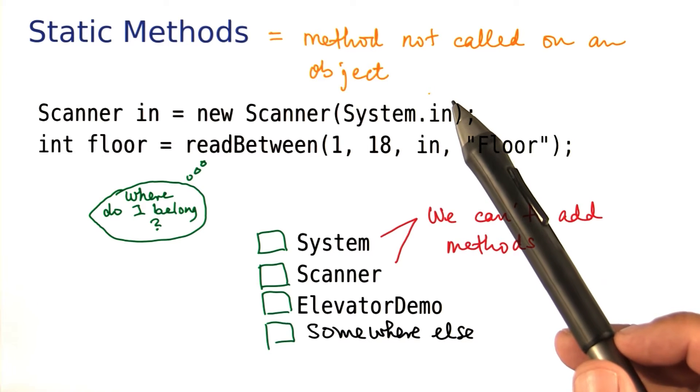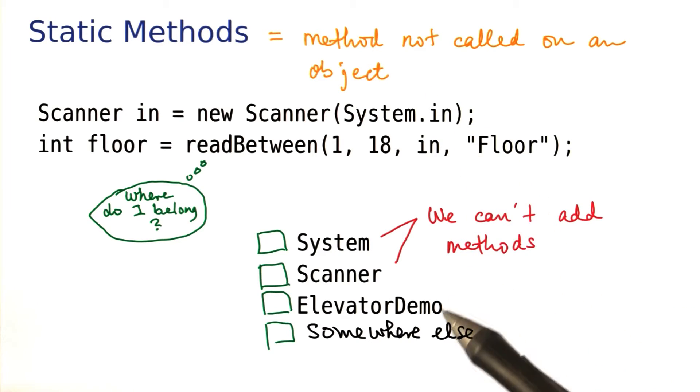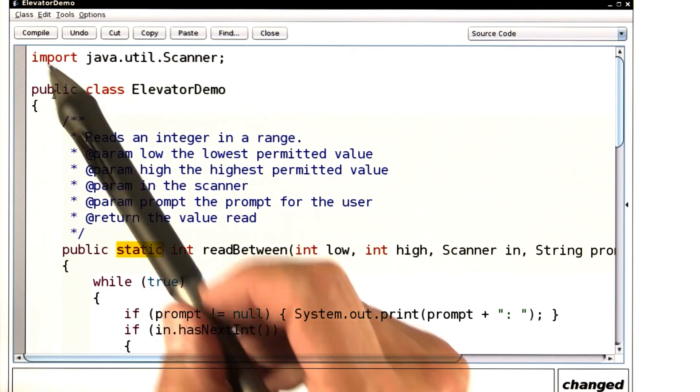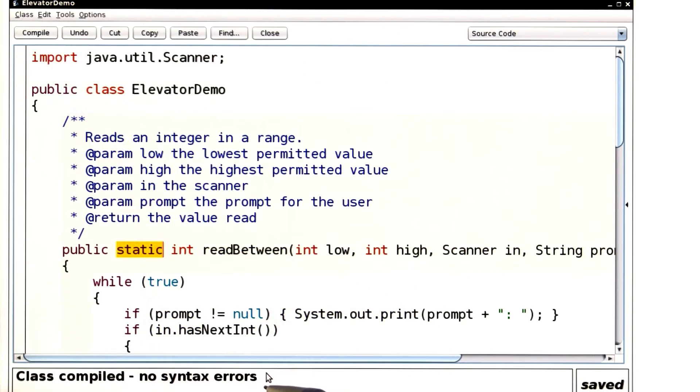So one remedy is simply to go back into elevator demo and declare the helper method static, like this. Now all will be well, and the syntax error is gone.